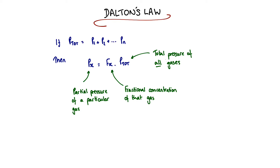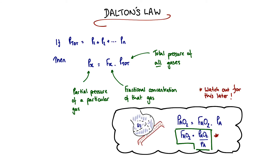We can apply this to our alveoli. The partial pressure of oxygen within the alveoli will be the fraction of oxygen — as a fraction of the other gases within the alveoli — times by the total alveolar pressure. We can rearrange that so that the fraction of oxygen within the alveoli equals the partial pressure of oxygen within the alveoli divided by the total alveolar pressure. This term forms an important part of our derivation.